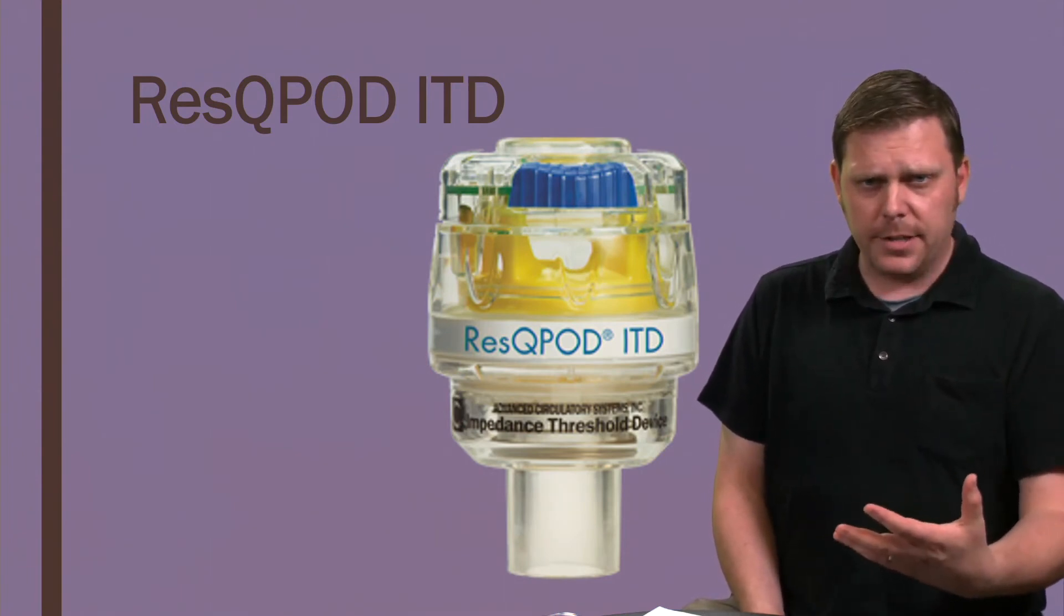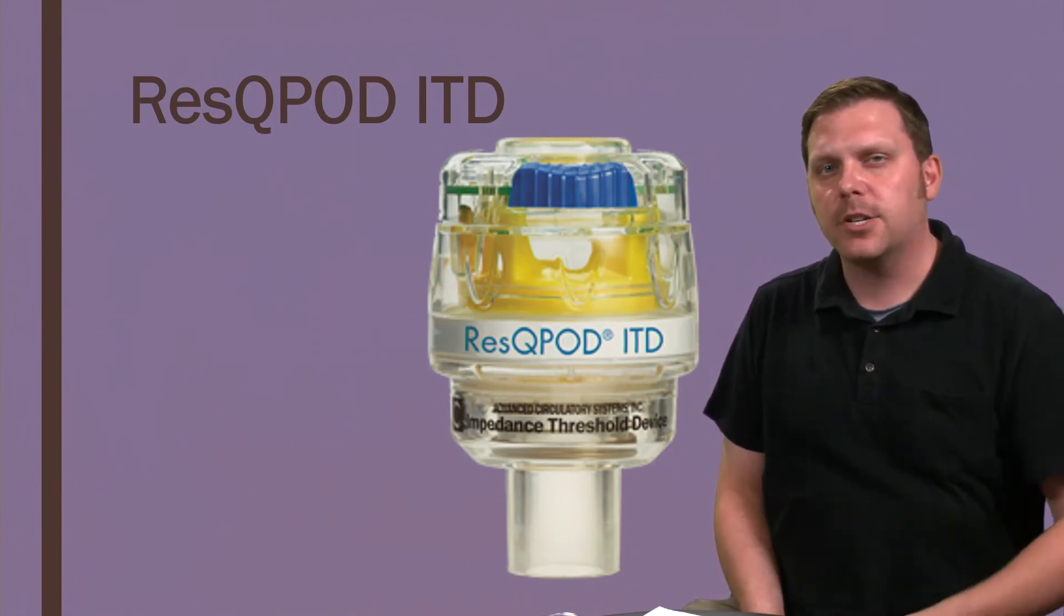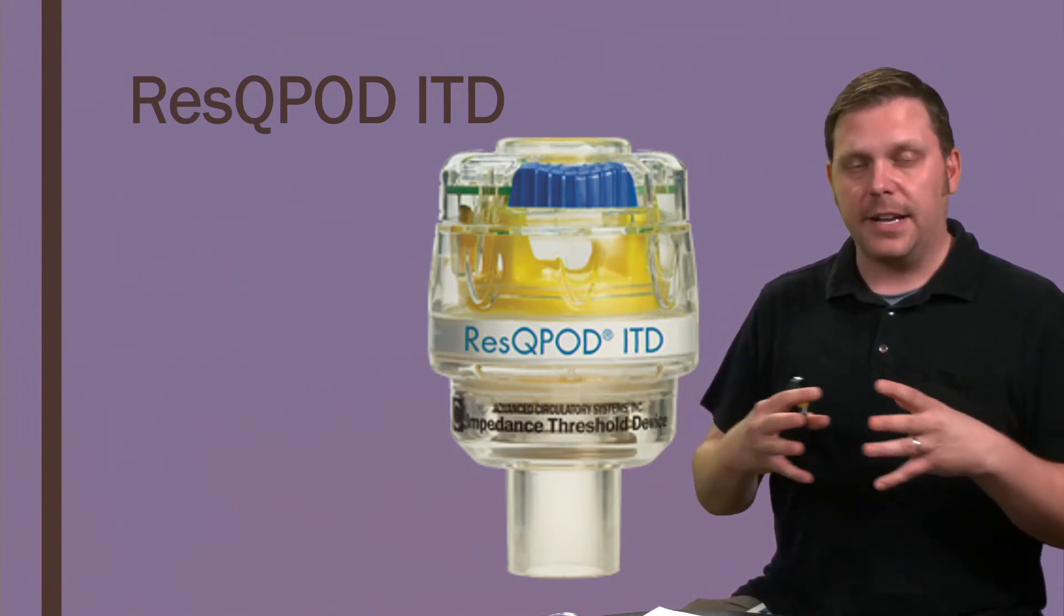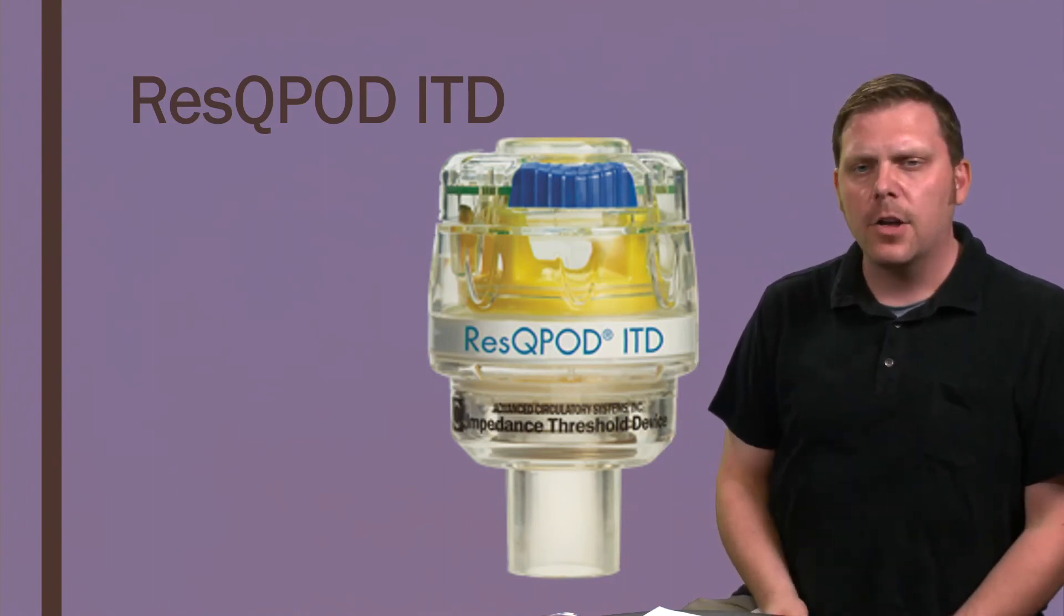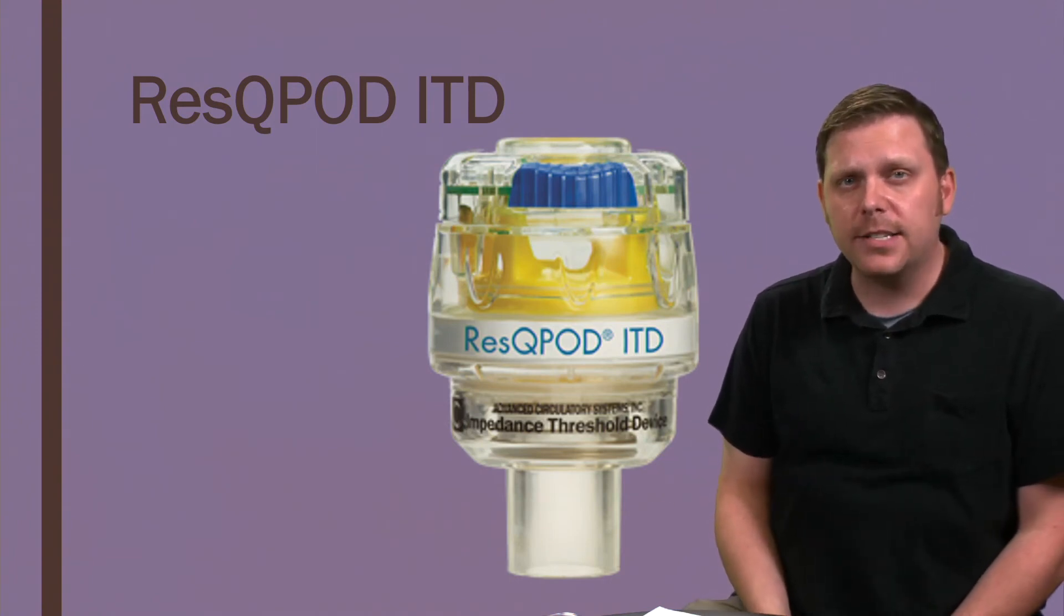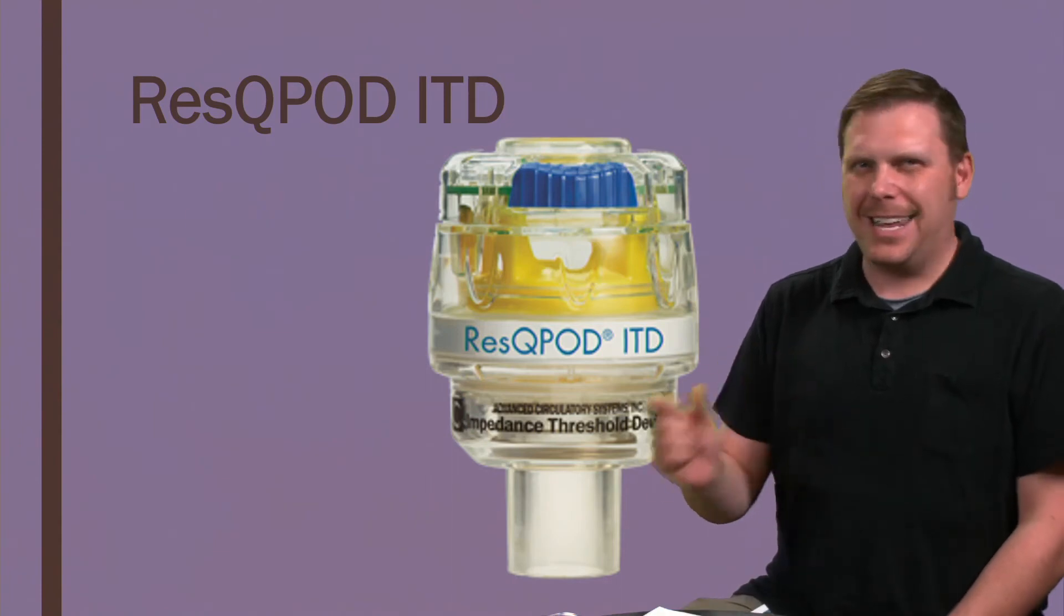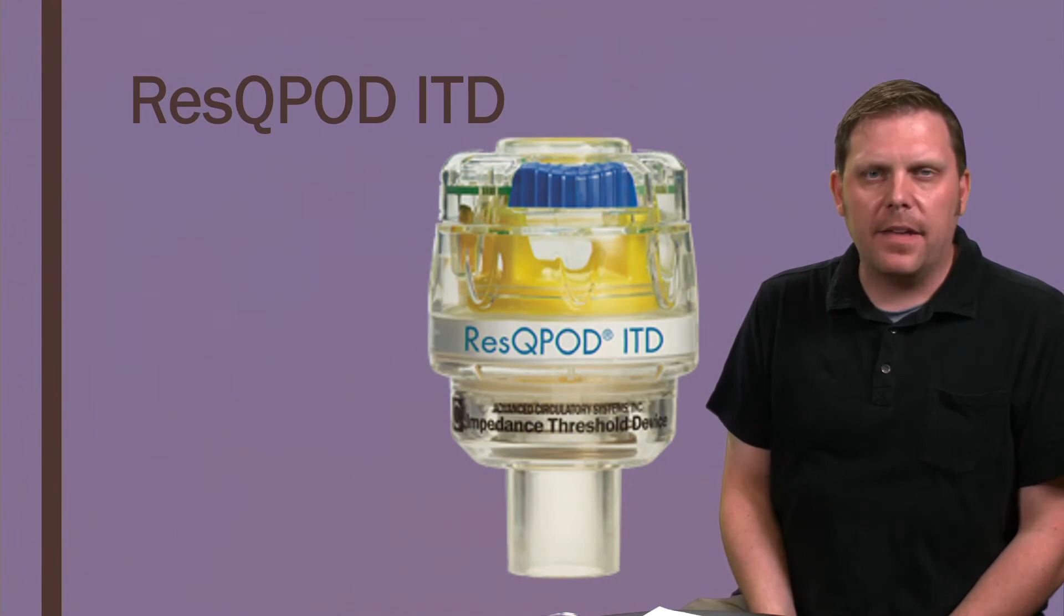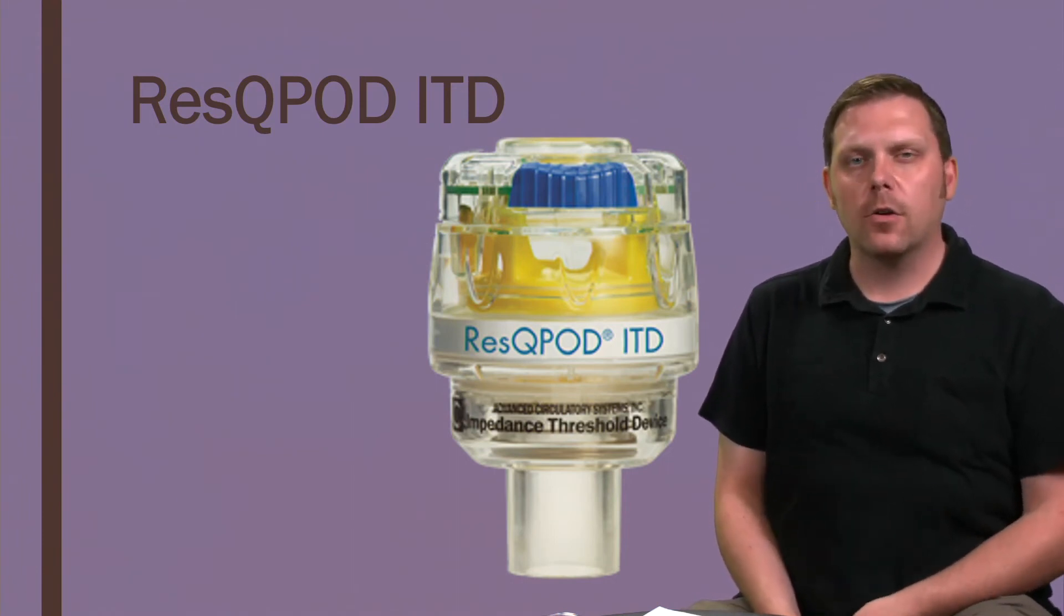And as we do compressions, specifically when we're decompressing, so during the decompression phase, this increases the amount of space that the heart can expand, which increases the negative pressure of blood back to the heart. We want to have this on our patients anytime they're in cardiac arrest. Typically, if they're one year of age or older or 10 kilograms or older, some hospitals and some departments may vary from that. That is the standard of care for most of our patients is one year or 10 kilograms.